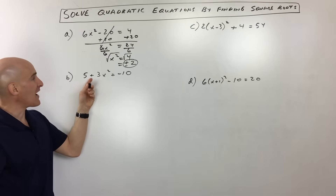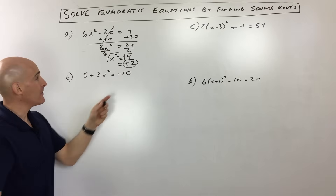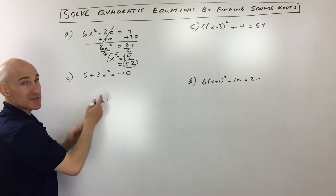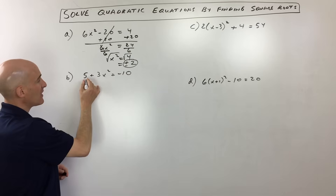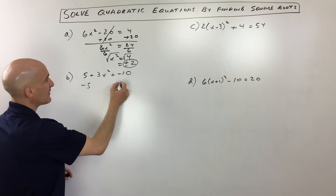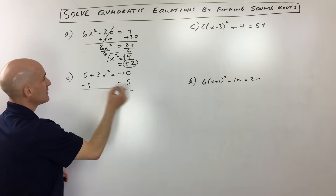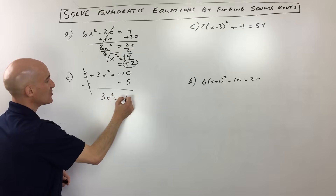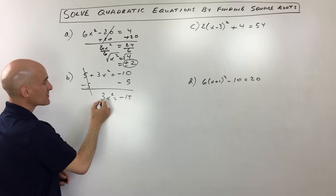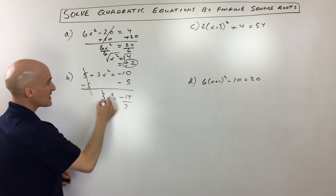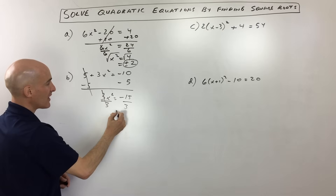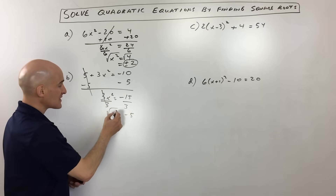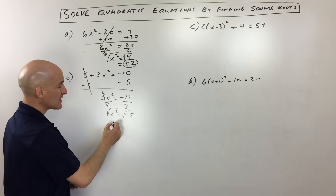Example B: 5 plus 3x squared equals negative 10. Same idea — we want to work from the outside in towards x, get x by itself. So let's do the opposite of adding 5 and subtract 5. These cancel, we get 3x squared equals negative 15. We want to divide both sides by 3, so x squared gives us negative 5.